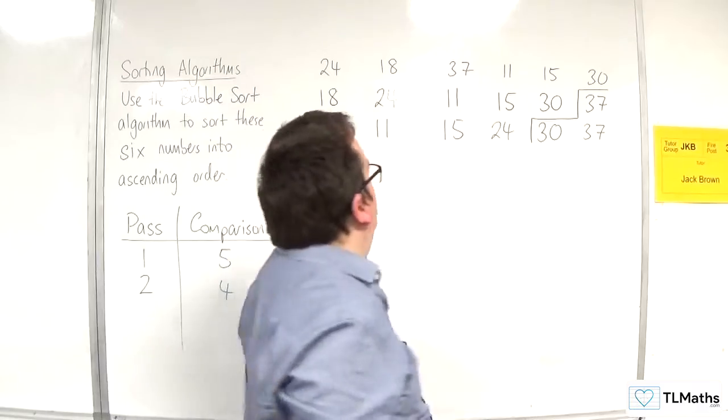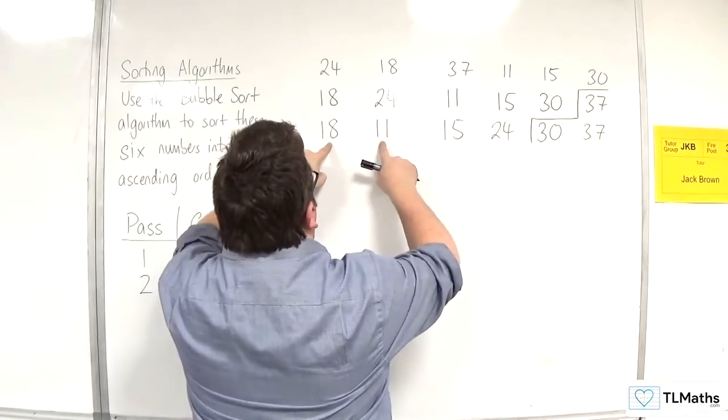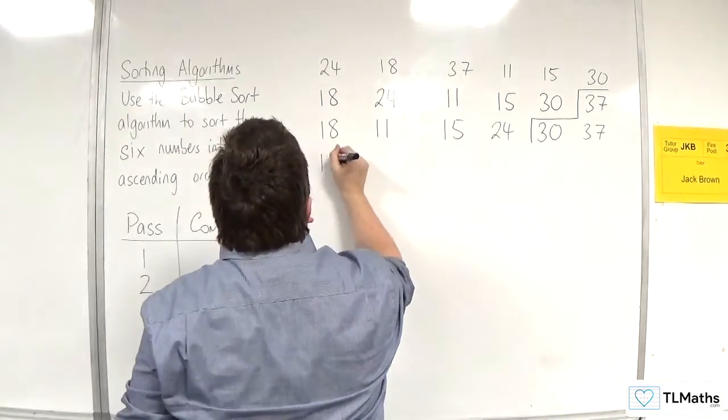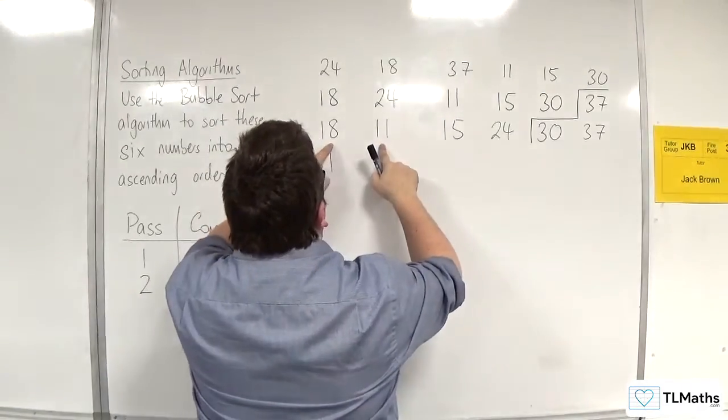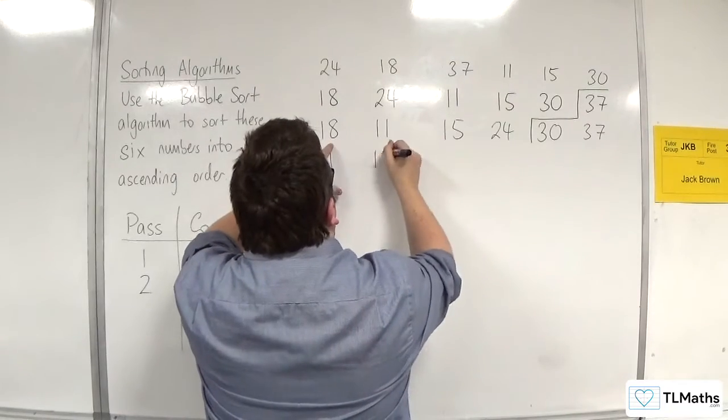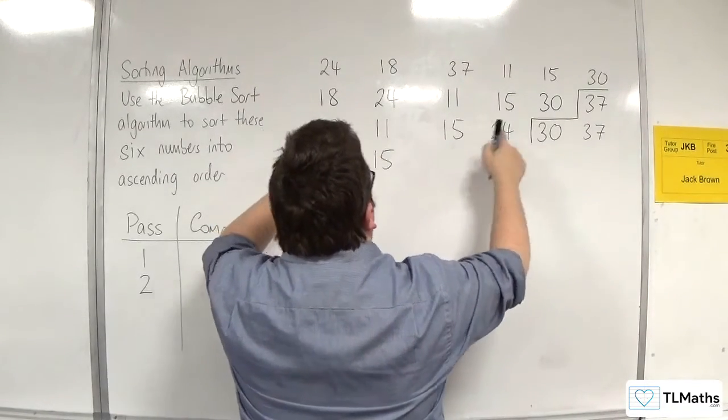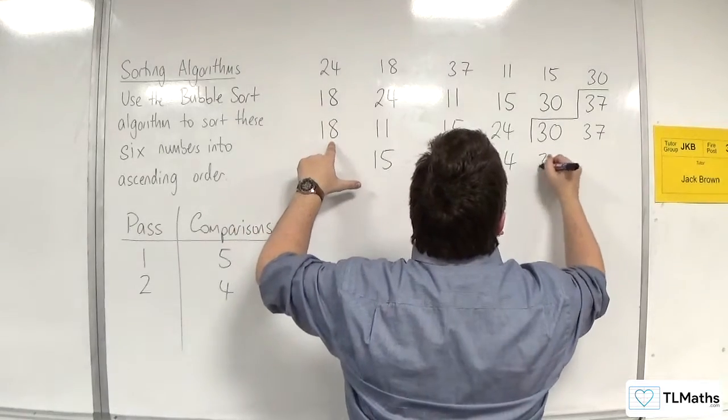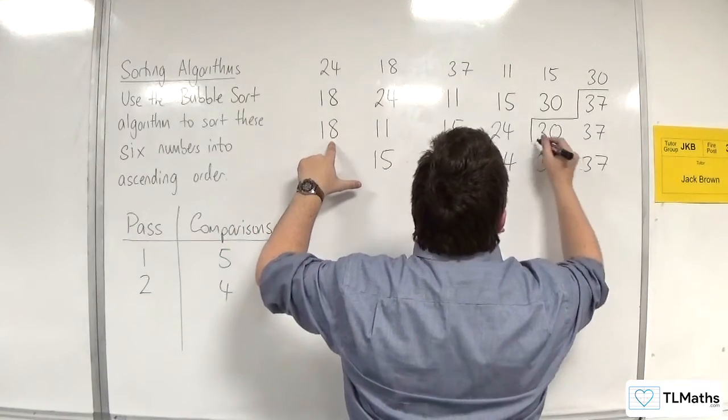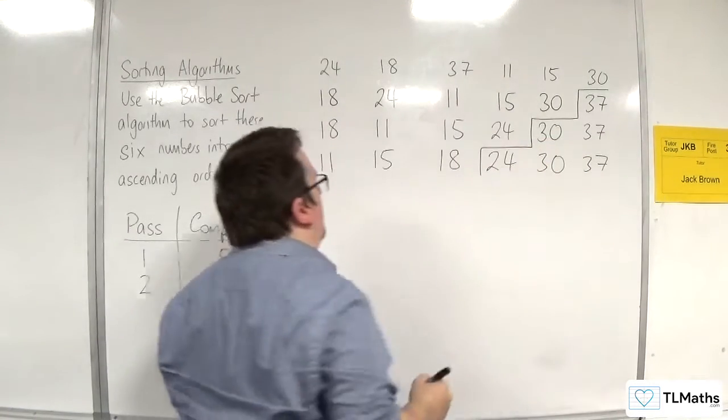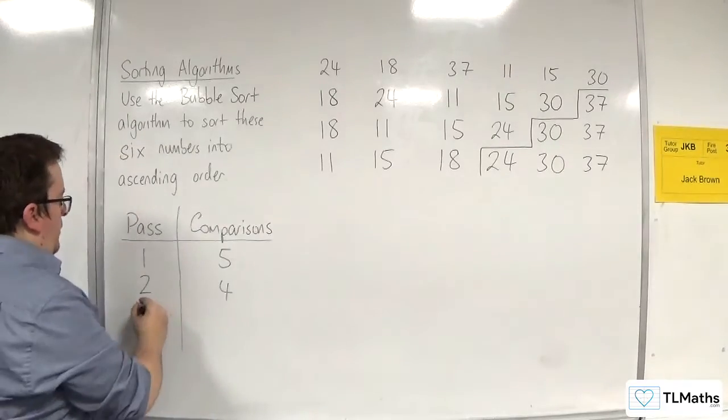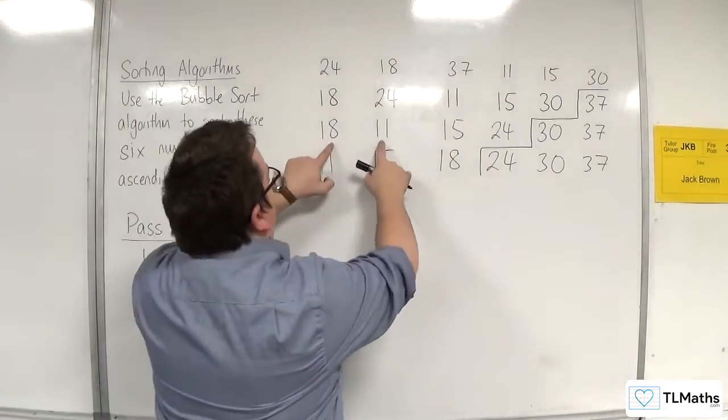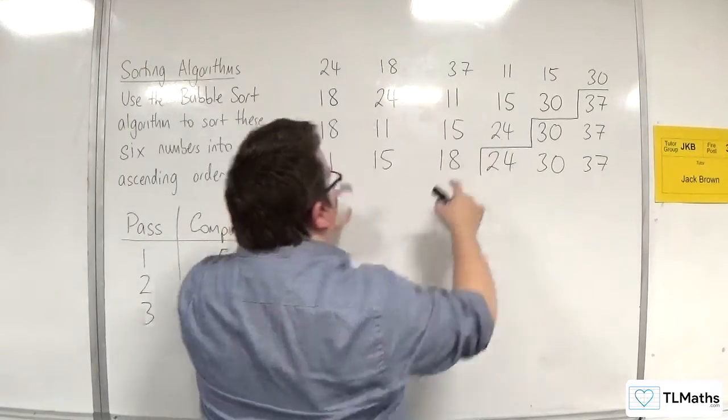So we're now down to these four. So looking at 18 and 11, we compare those. 11 is less than 18. 18 and 15. 15 is less than 18. 18 and 24. Well, 18 is less than 24. So 24 has bubbled to the top. So in the third pass, we made one, two, three comparisons.